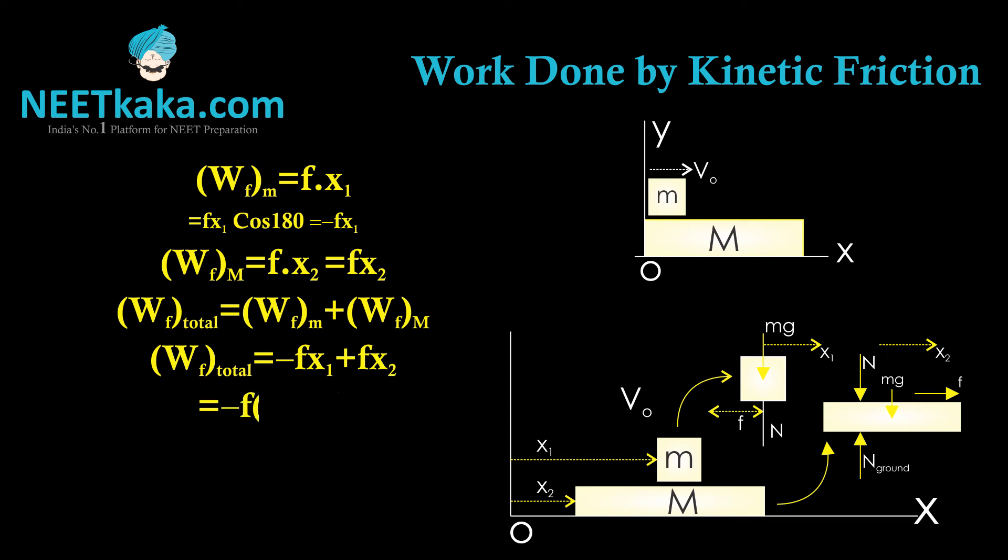Because x₁ is greater than x₂, x₁ minus x₂ is positive. So the work done W equals minus (instead of F we can write μmg), so W equals minus μmg(x₁ minus x₂). Because x₁ minus x₂ is positive, this work done is overall negative.